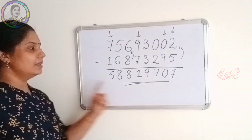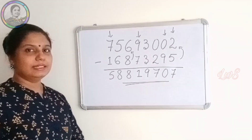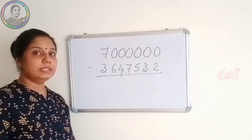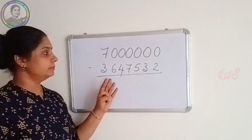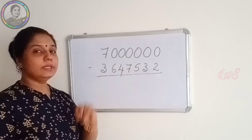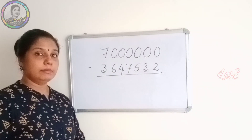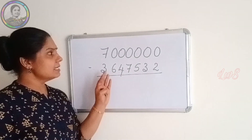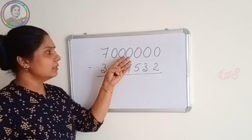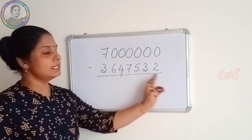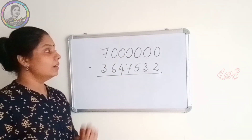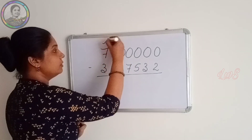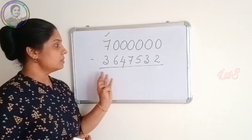Within seconds, we find the answer. Now the next question. Here also we can use the same method. But this is somewhat like finding the complement of this number — the only difference is that instead of 1, we have 7 here.